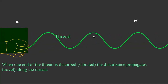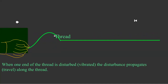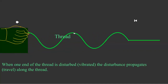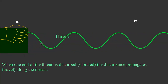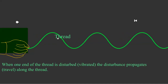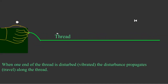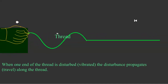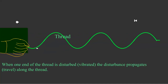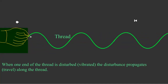This up is the crest and this down is the trough. It appears that the crest or trough carries the thread, but waves or crests and troughs cannot carry the medium. If they were carrying the medium, the thread would have detached from the hand.